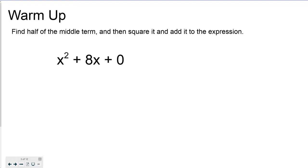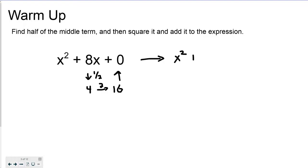So if I go ahead and take half of 8, half of 8 is 4. I'm going to square that amount to get 16, and I'm going to add it to the expression. So my new result after I've done that would be x squared plus 8x plus 16.